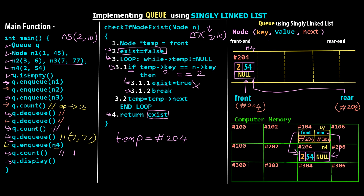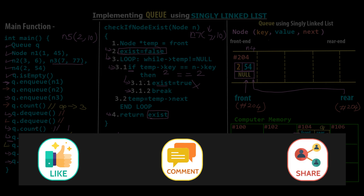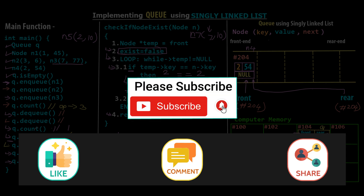This pretty much concludes all the different standard queue operations when implementing queue using singly linked list. I'm going to conclude this tutorial here. All the different standard operations were covered extensively with pseudocode and diagrammatic representation. I hope you have a very clear idea about how to implement a queue using singly linked list and implement all the standard operations. In the next video tutorial, we will write a C++ program — the practical side of implementing queue using singly linked list, converting all these pseudocodes into C++ code. Thanks for watching. See you in the next one.